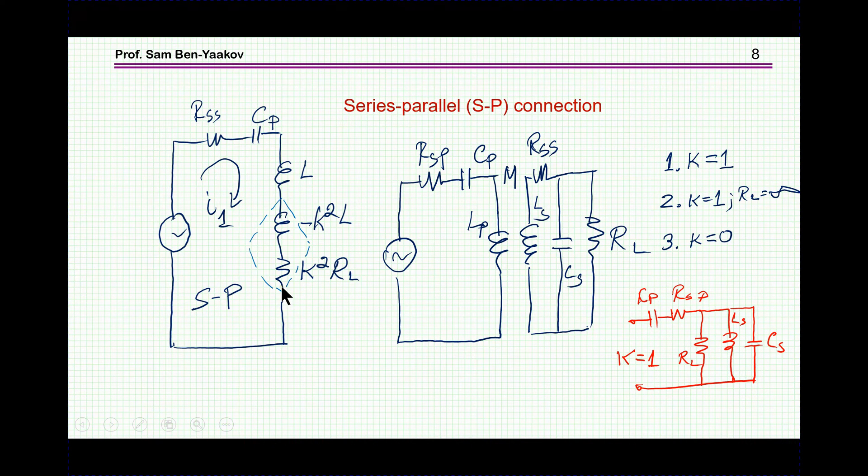So, what we see here now, if K is equal to 1, if K is equal to 1, these two cancel each other, and then, RL goes to infinity, so, here we have, like, an infinite impedance, exactly as we have it here.